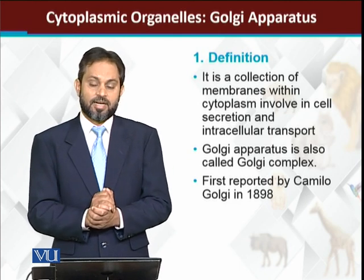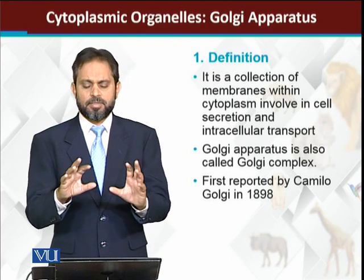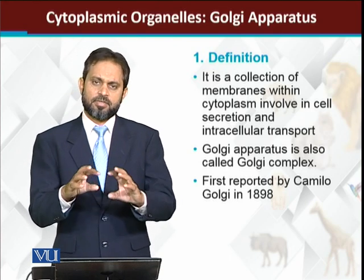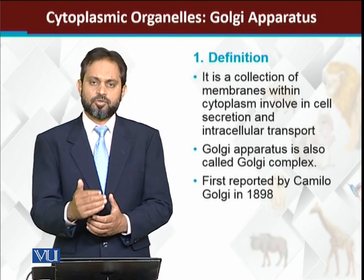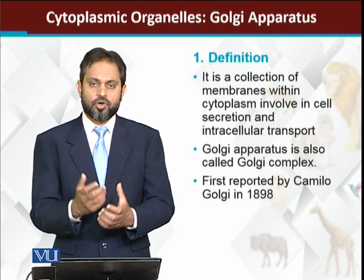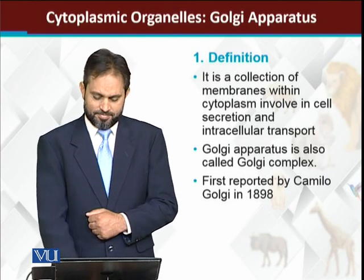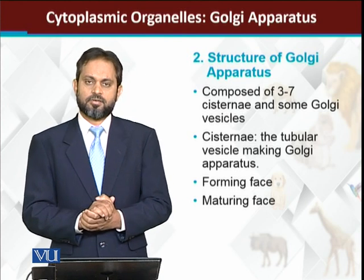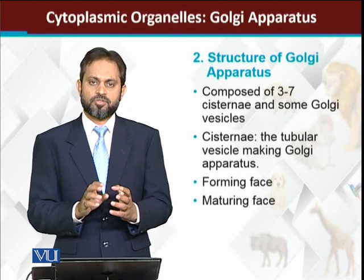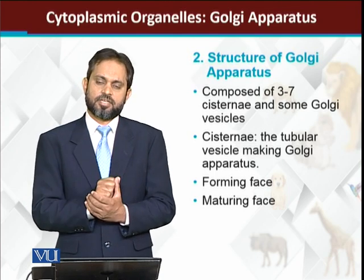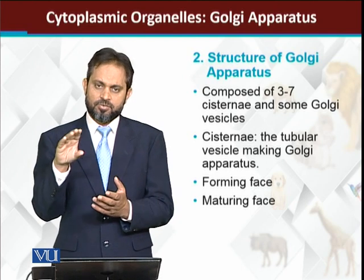An interesting thing about Golgi apparatus is that it is a membranated structure. Past studies showed that Golgi apparatus is an organelle and was initially identified as such. The structure of Golgi apparatus is basically made up of cisternae, which are tube-like flattened sac structures.